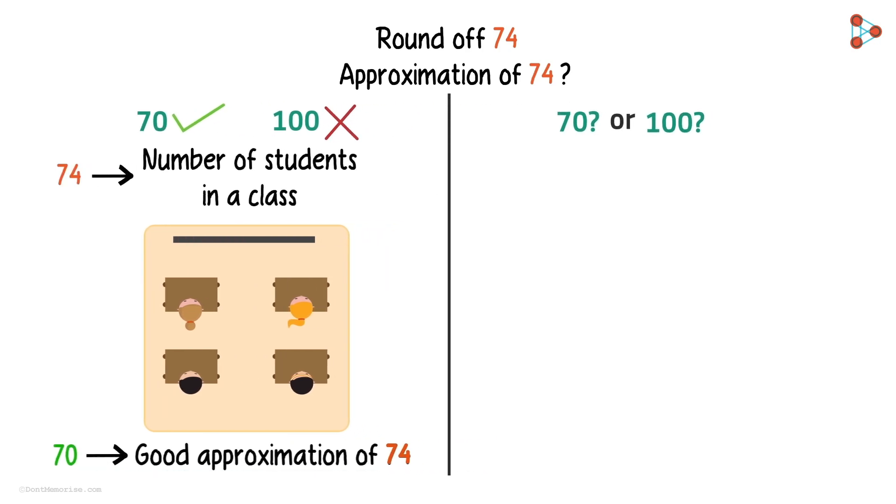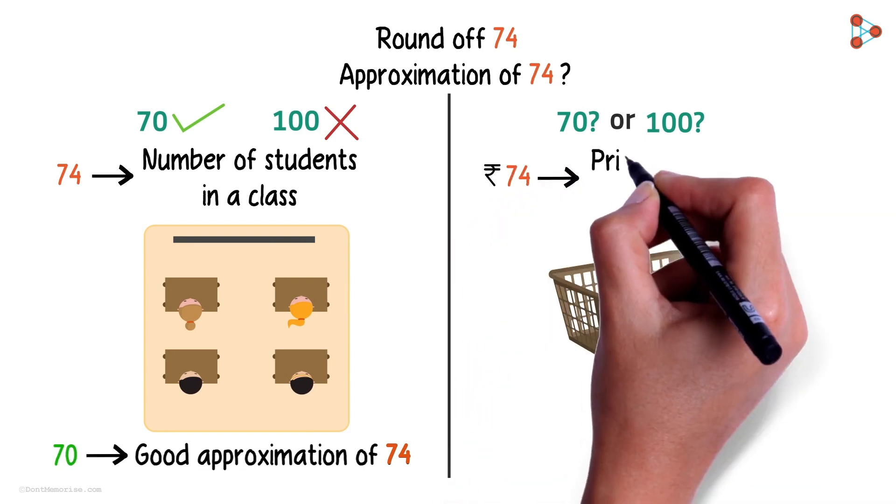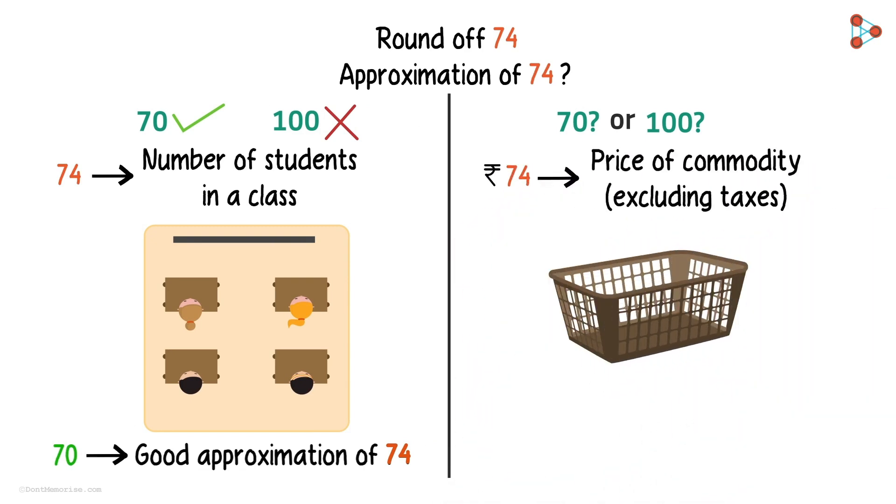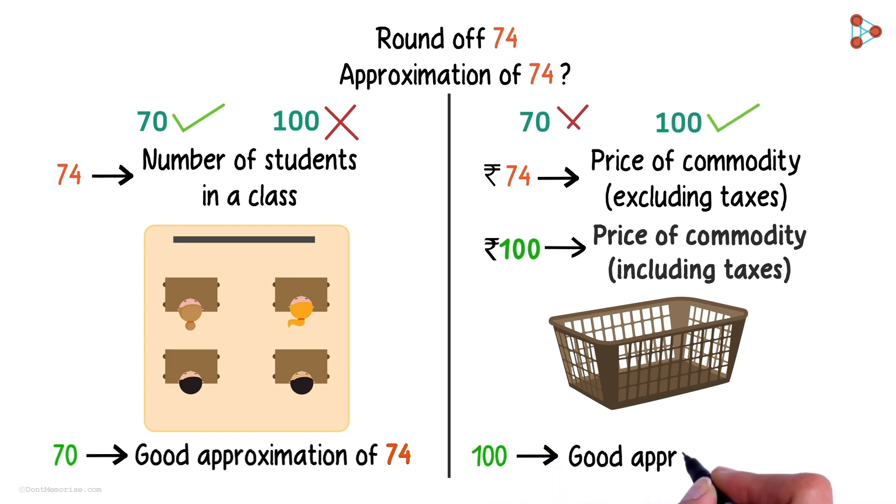But let me give you another situation here. Say the number 74 represents the price of any commodity excluding taxes. If this is the case, then it is fair to assume the actual price of that commodity to be around 100 rupees with all the taxes included. So in this case, 100 is a better estimation of 74.